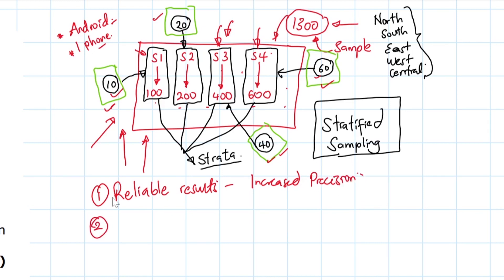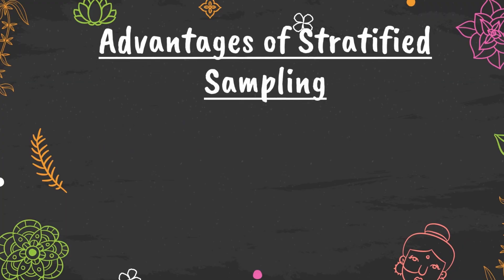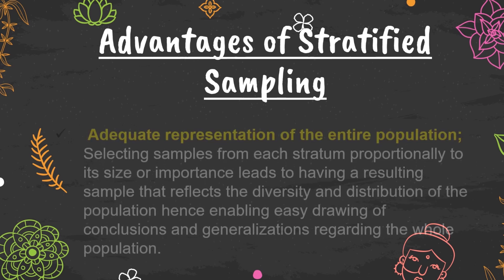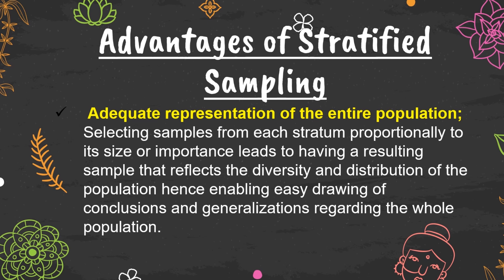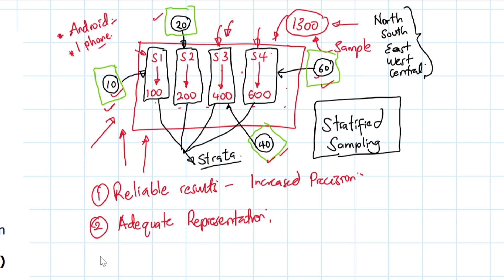The second advantage is adequate representation of the entire population. By selecting samples from each stratum proportionally to its size or importance, the resulting sample reflects the diversity and distribution of the population. The sample is well represented, and this enables easy drawing of conclusions and generalizations regarding the entire population.